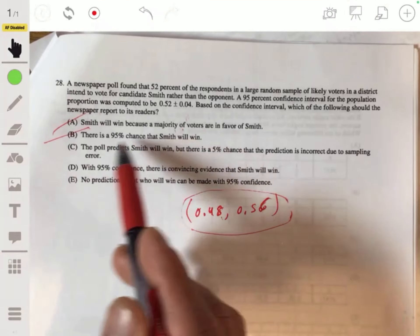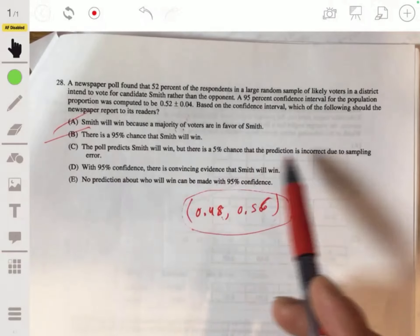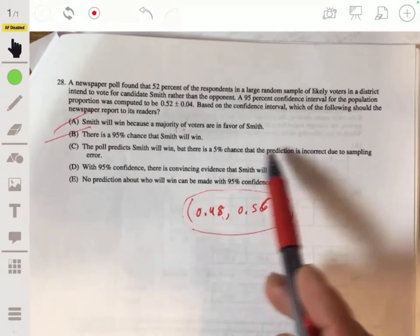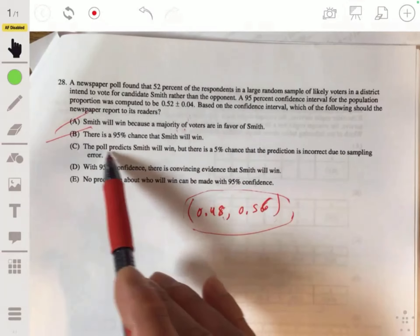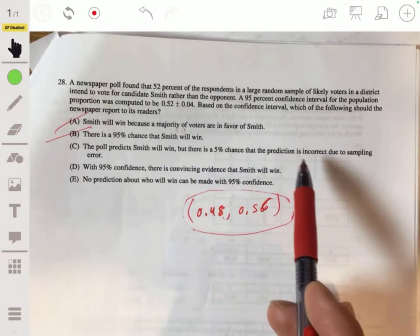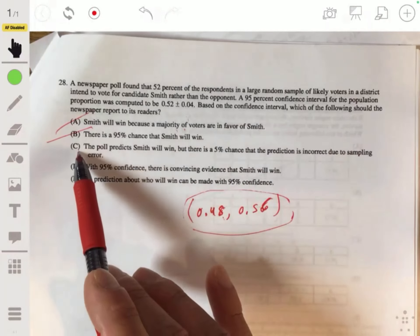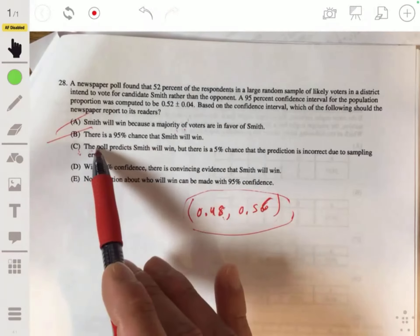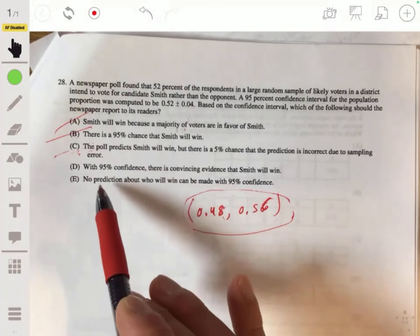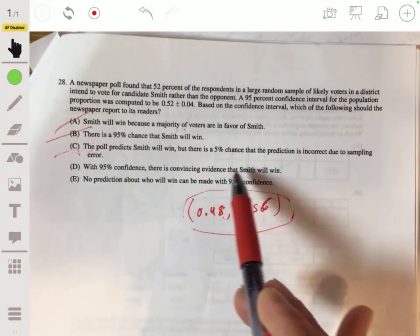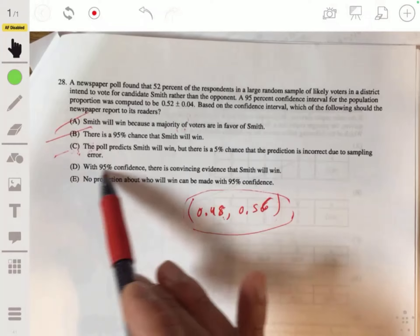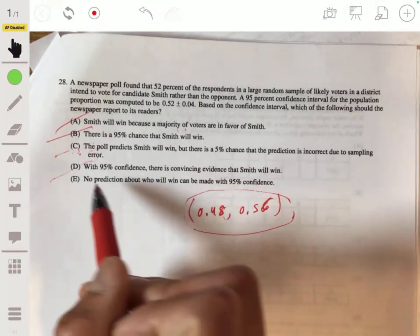If it has anything below 0.5, then we can't say that most voters are going to vote for Smith. That's most likely to win because we have some values that are below 0.5. It doesn't matter if it's not centered down there. So it's not going to be A. No 90% chance for Smith. Don't put B, please. Yeah, these are interesting. The poll predicts Smith will win, but there's a 5% chance the prediction is incorrect due to sampling error. That's clever because I bet a lot of students will pick that because it's the longest one. Don't pick that one.